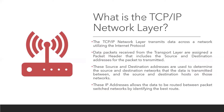The TCP/IP network layer is the layer that transmits data across the network utilizing the Internet Protocol. Data packets received from the transport layer are assigned a packet header that includes the source and destination addresses, so the packet knows where it's coming from and where it's going. IP addresses allow data to be routed through different networks no matter how far they are from each other, and also help identify the best route for the traffic.